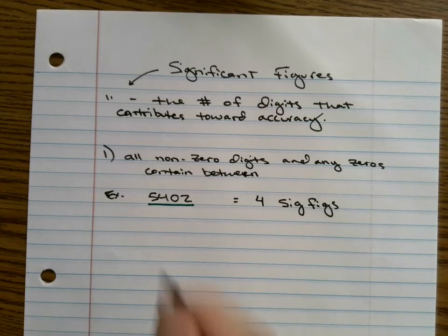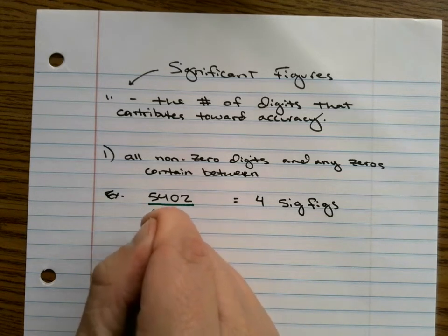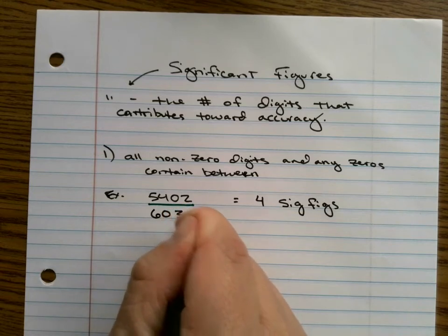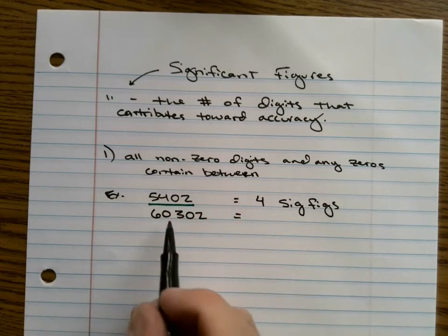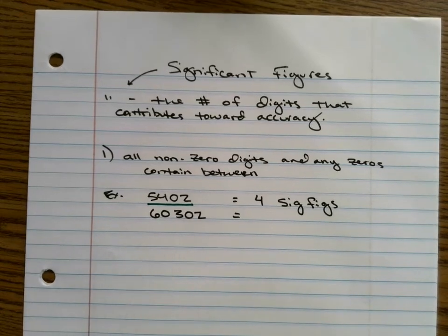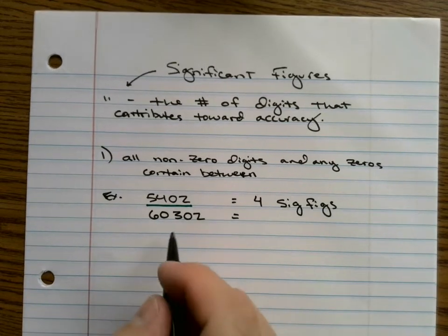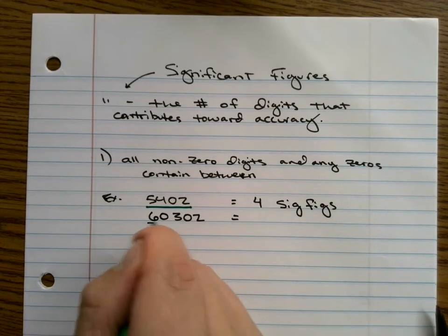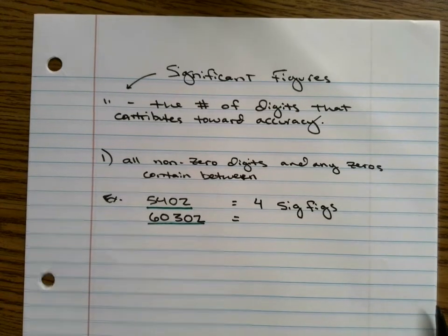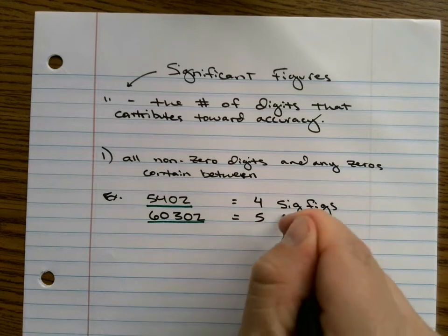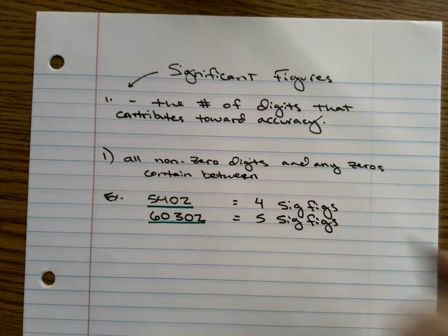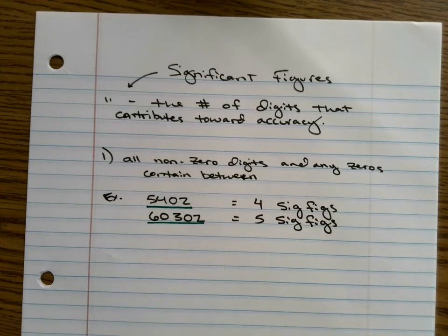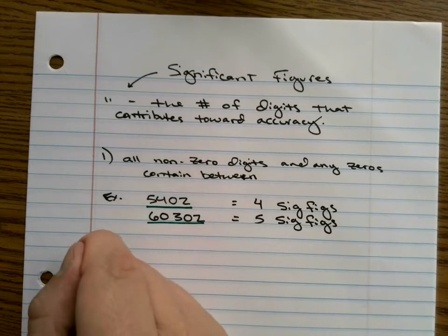Let's do another example of this. What if I had 60,302? So I have zeros that are locked in between these significant numbers. So there's going to be five sig figs in this number. Pretty simple. If a zero is in between two non-zero digits, it's going to be significant.